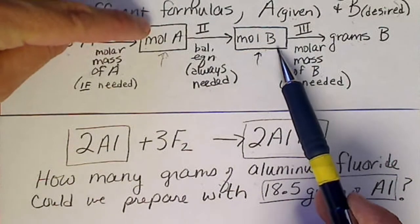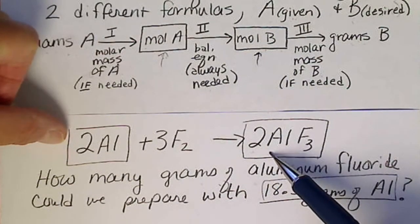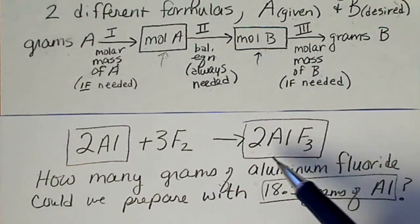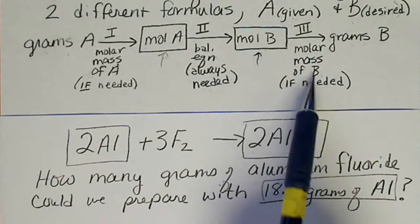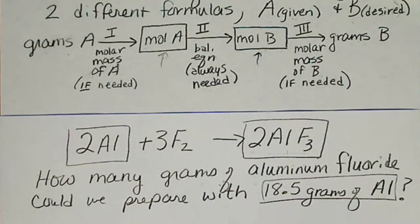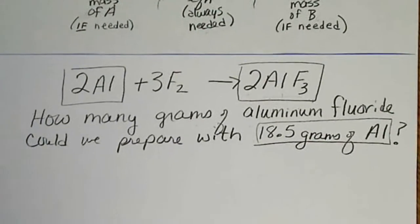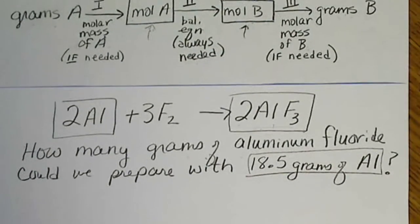And then these two are going to be equal. So we'll see that the twos also cancel. And then since we're asked for grams of aluminum fluoride, once we have moles, we'll use the molar mass of aluminum fluoride to convert to grams.